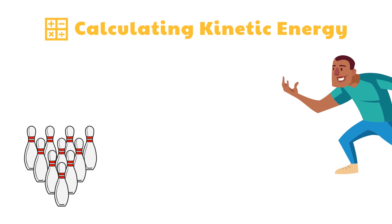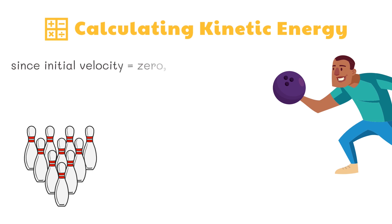In our previous example, since the ball started from the boy's hand, which is at rest, the initial velocity is zero, since the ball did not move yet. Thus, the acceleration is simply velocity divided by time.